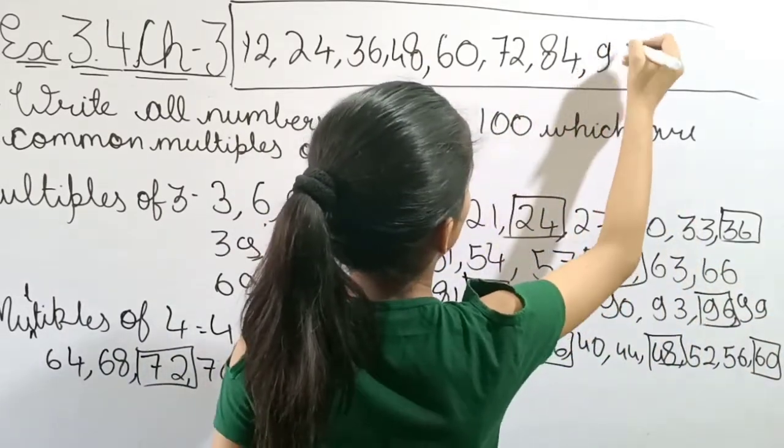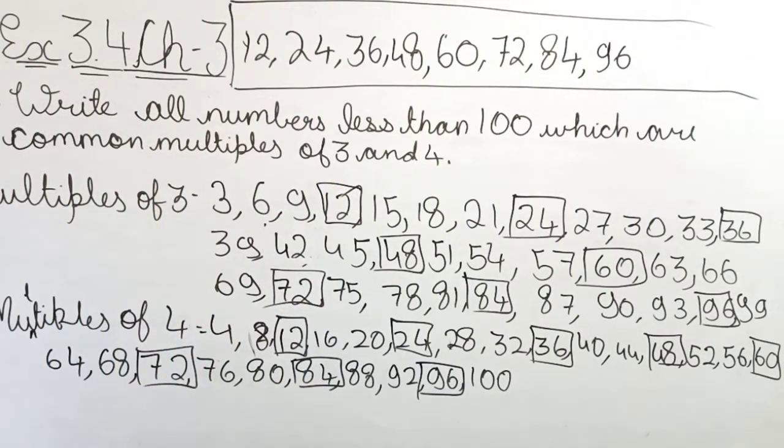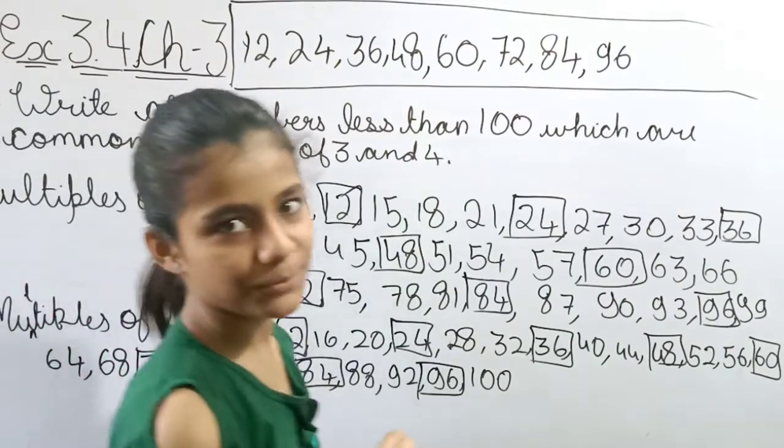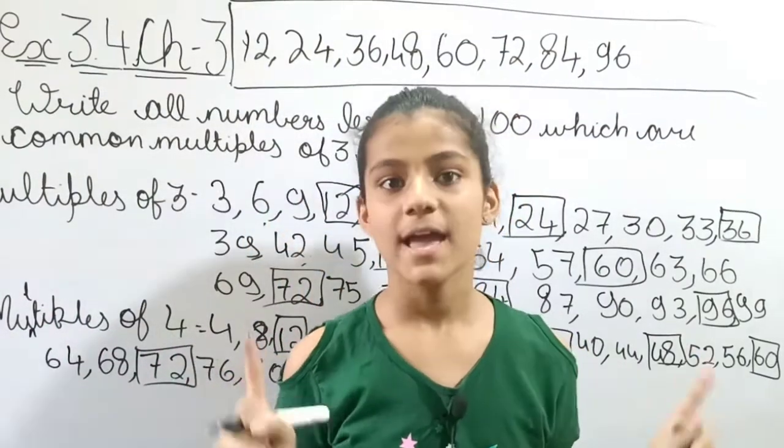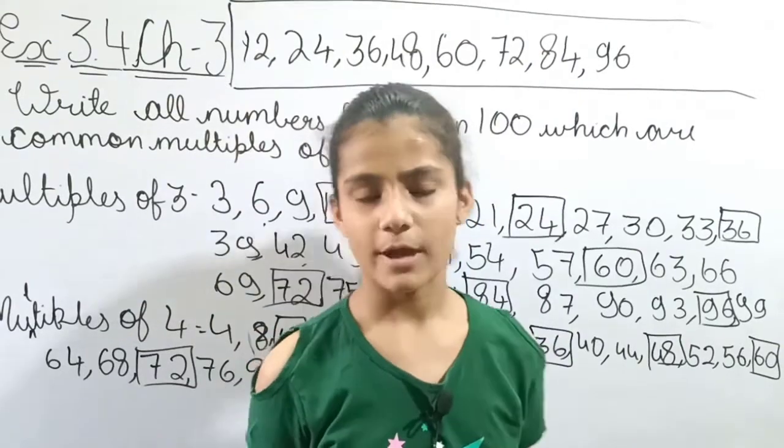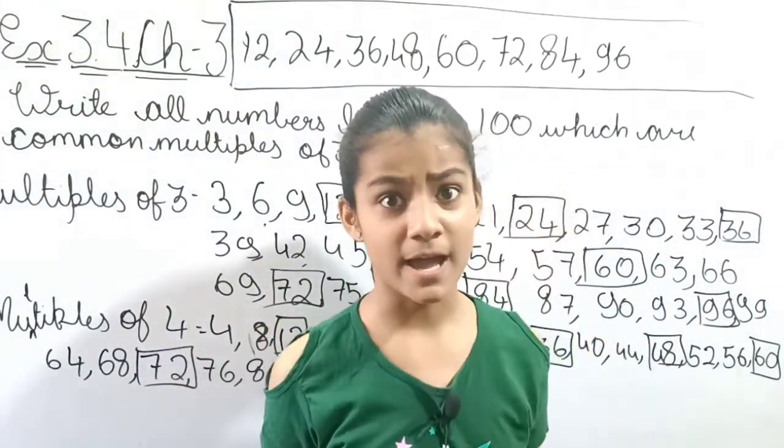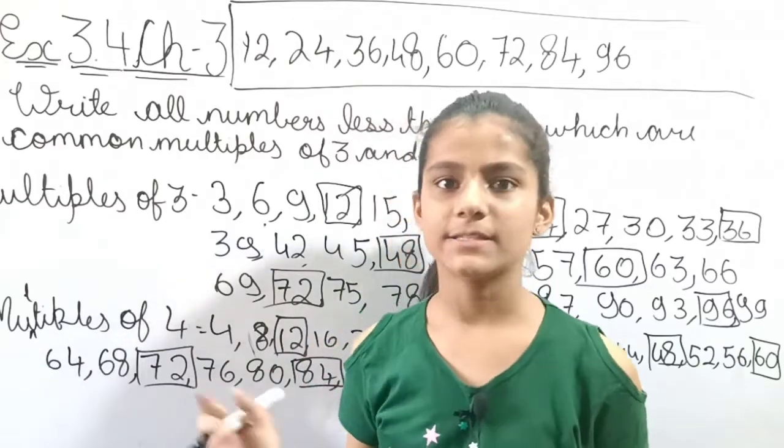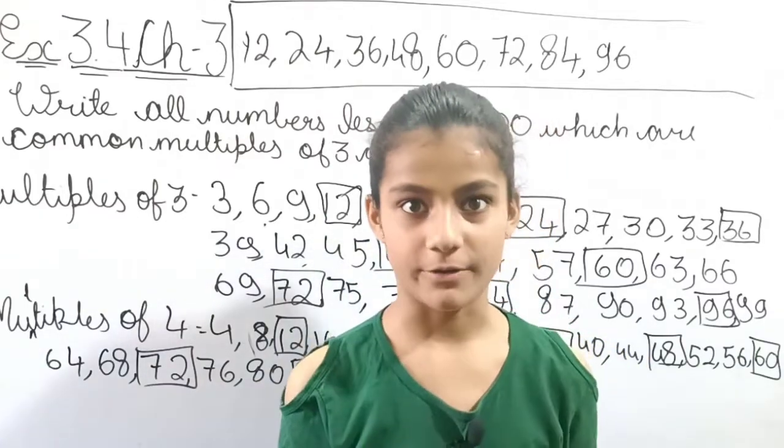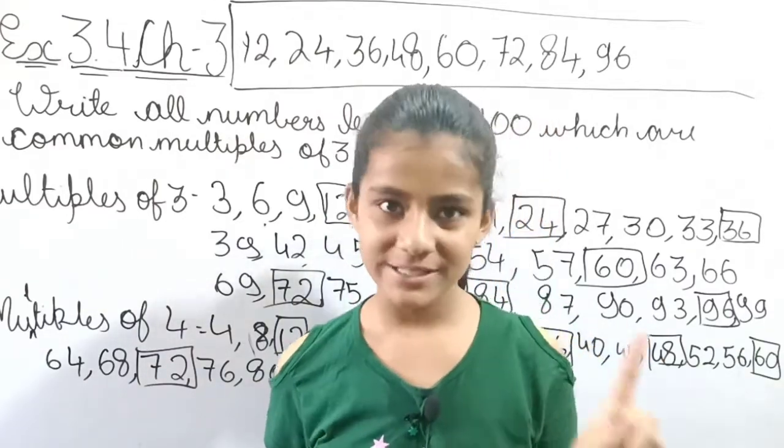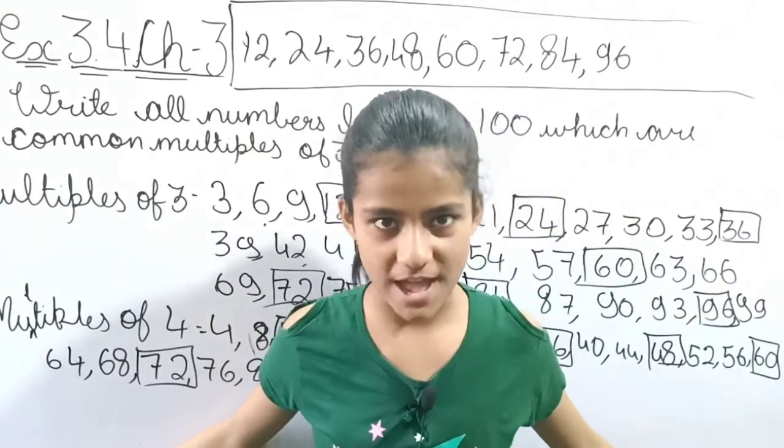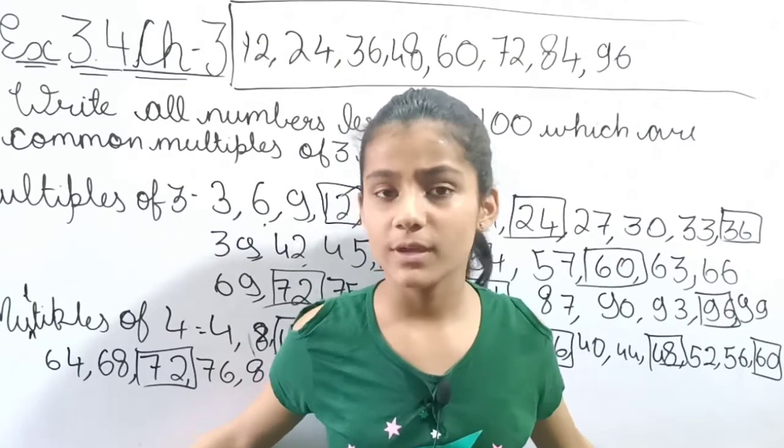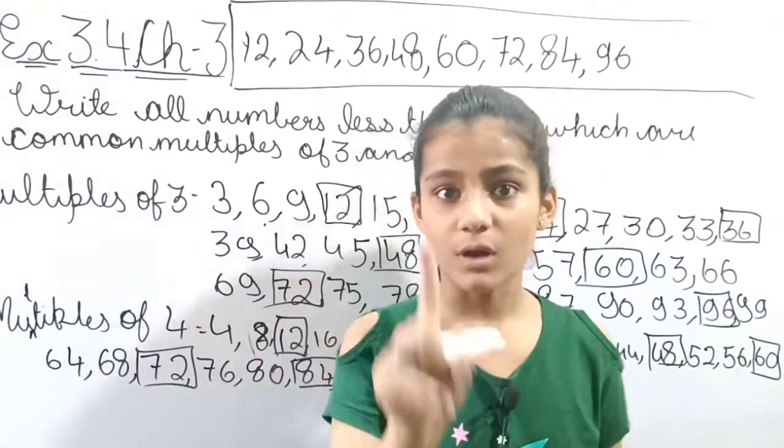So this is our common multiple of 3 and 4 up to 100. Just like I said, you will get a surprise at the end. Thank you so much for coming to the end. Now you will get a surprise, the short trick.